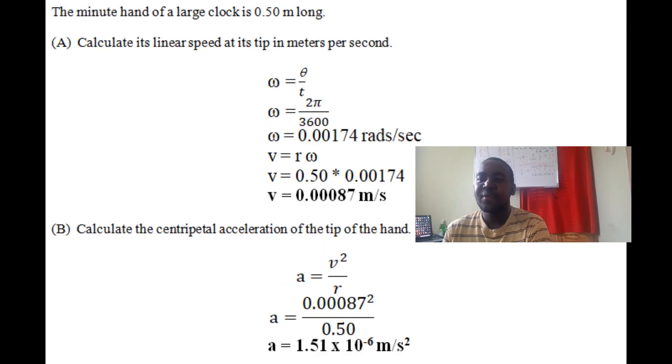Question two: A minute hand on a large clock is 0.50 meters long. Part A: Calculate the linear speed at its tip in meters per second. Linear speed is v and angular speed is omega (ω). We know that ω = θ/t, where θ means radian.